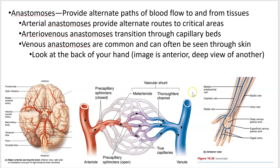The same thing works with venous anastomoses. If you look, this is the palm of your hand — deep inside the palm, you don't see this from the outside — but if you flip your hand over and look at the back, you can see a similar pattern of veins coming back from your fingers. This allows blood to go either way back toward the heart.